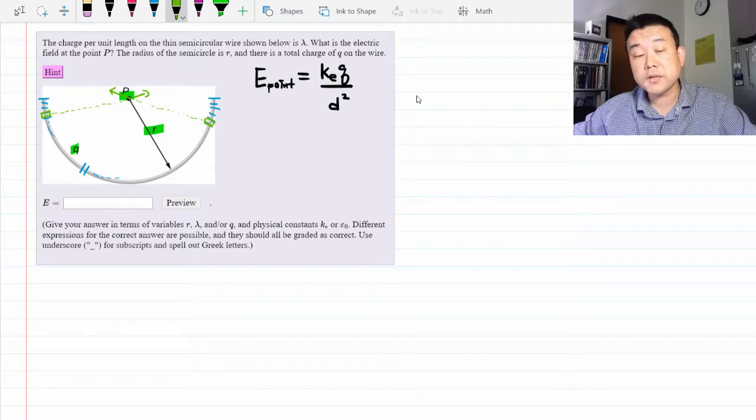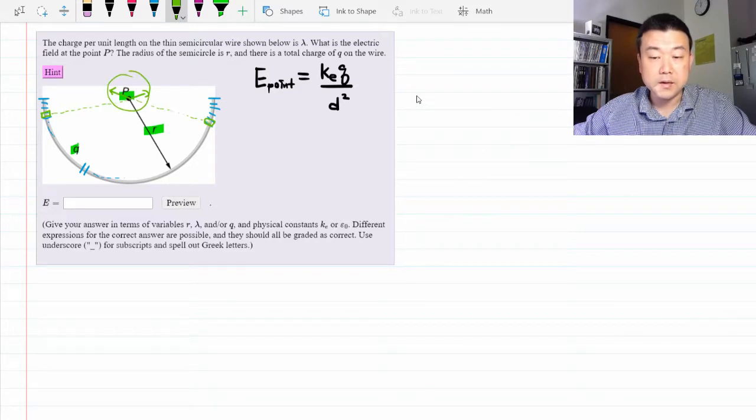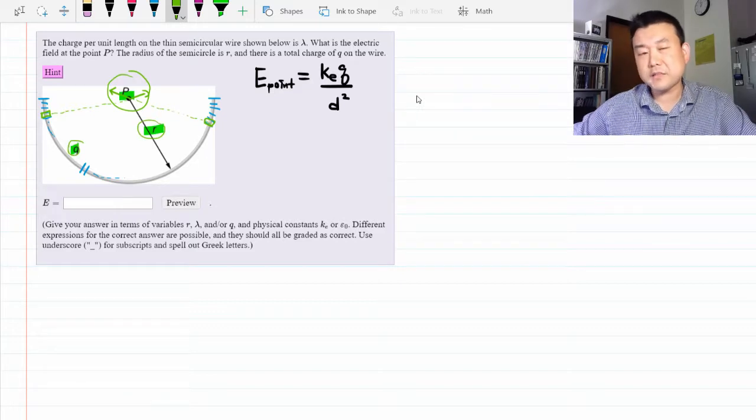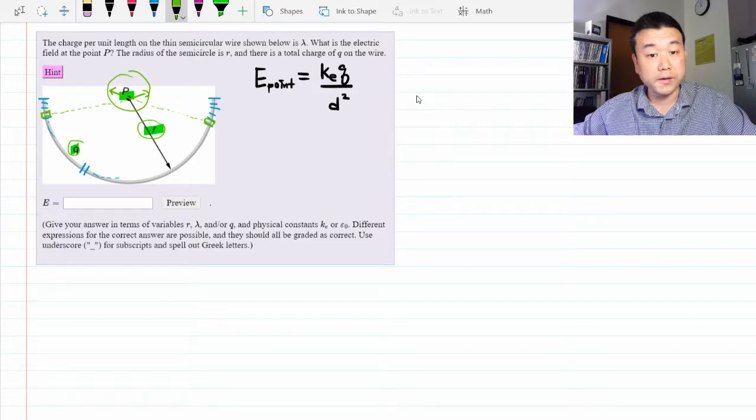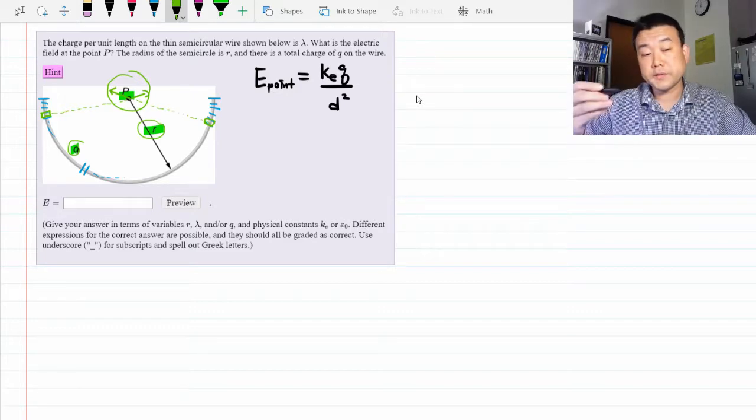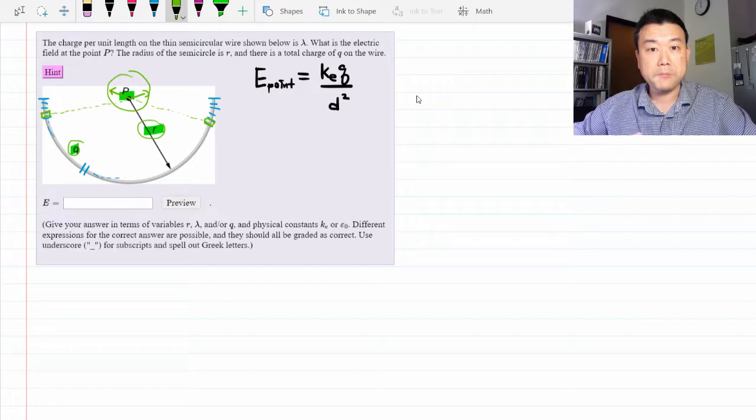they point in different directions. So if we simply say that electric field at point P is given by K Q divided by r squared, you can't expect that result to be correct because you have ignored the directions. There will be some horizontal components that are going to cancel out. So we have to do the proper calculation.